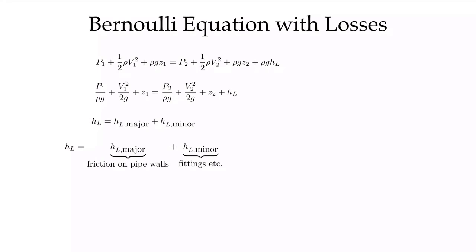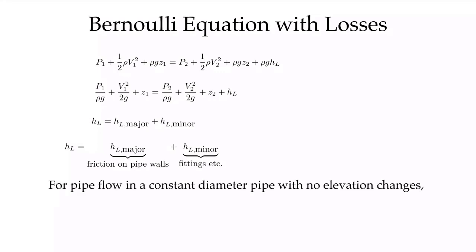The major losses are the pipe friction on the walls due to wall shear stress, which is balanced by the pressure drop in our fully developed flows. If we have flow in a constant pipe with no elevation changes, this simplifies greatly. We can see clearly that p1 minus p2 — p1 has to be higher than p2 in order to drive the flow — will be equal to rho*g*h_l, because if the pipe diameter is constant, v1 equals v2 and those terms cancel out. Dividing by rho*g, p1 minus p2 over rho*g equals h_l, the losses in our system.